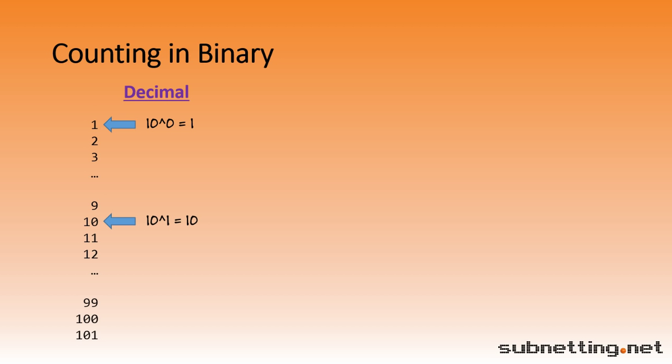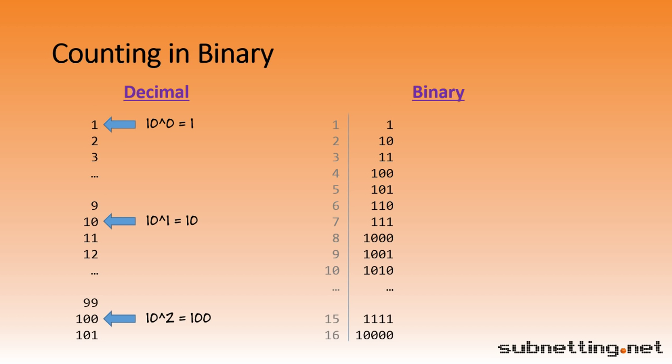10 to the first power is 10. Now we've added a second digit. 10 to the second power is 100. Now we've added a third digit. Binary works similarly to decimal, except that instead of adding a new digit at every power of 10, we add a new digit at every power of 2. Here's what the numbers in binary look like. At each power of 2, we need to add a new digit. 2 to the zero is 1. 2 to the first power is 2. 2 to the second is 4. 2 to the third is 8. And 2 to the fourth is 16.